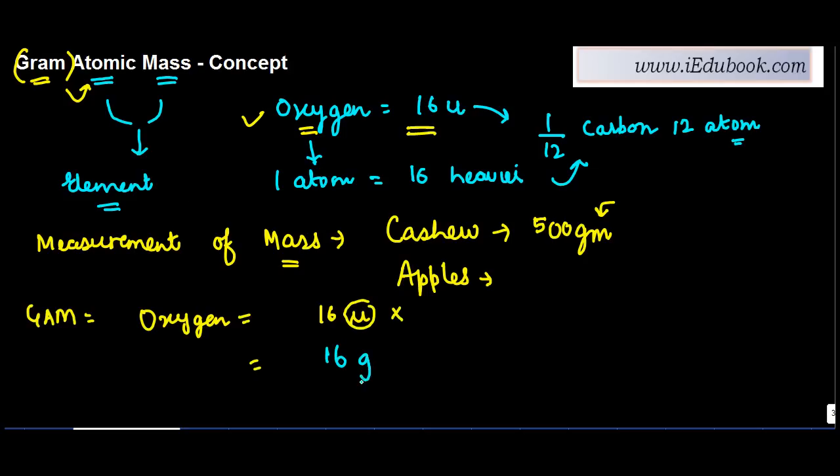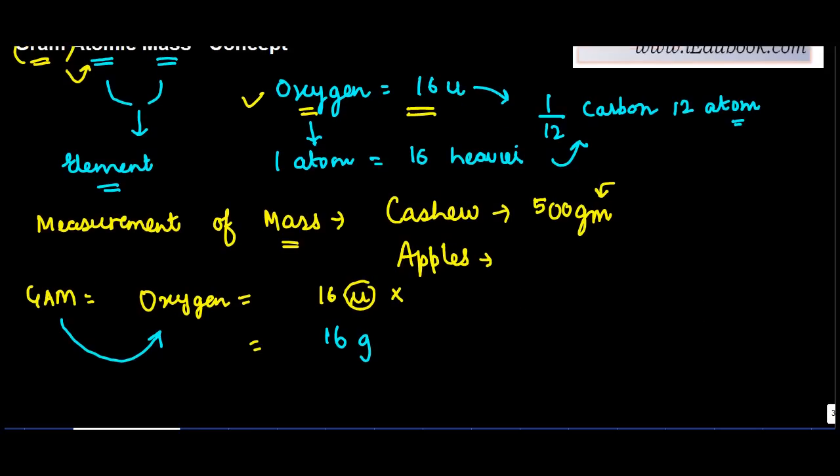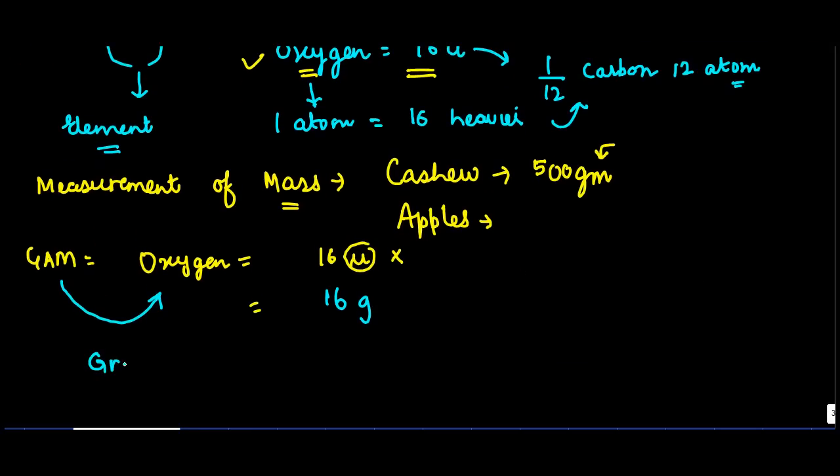And put it as grams. This is the gram atomic mass of oxygen. And this is what is known as gram atomic mass. A related concept to this is that of gram molecular mass. Since we are discussing this, let's also discuss gram molecular mass.